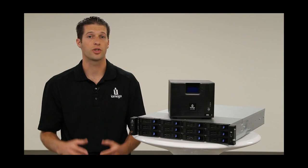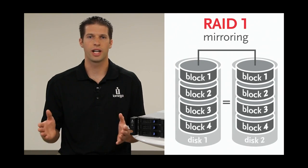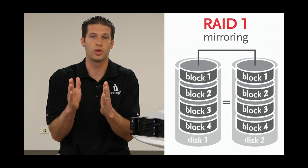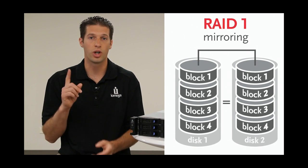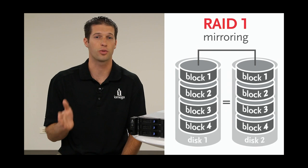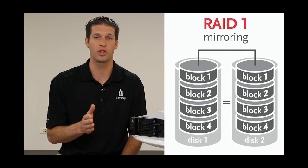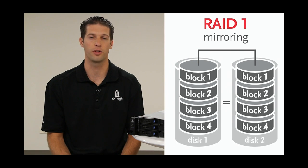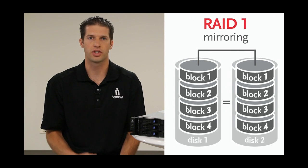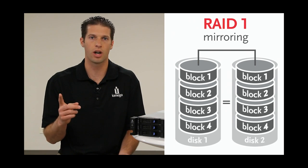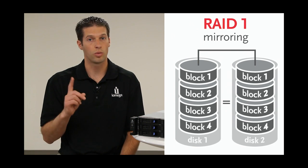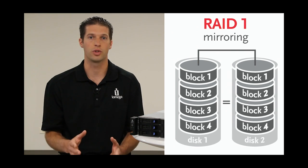Next, let's look at RAID 1. This utilizes mirroring, so the same data is written to two drives. If one drive fails, your data exists and is readily accessible on the other drive. The usable capacity will be roughly half the physical capacity of the drives. For example, if you have two drives that are one terabyte and set up for RAID 1, then you will have only one terabyte of usable capacity.